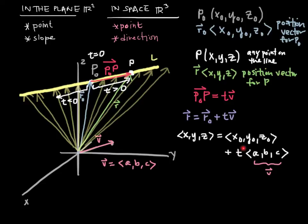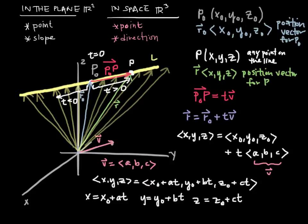t, the scalar here, is called the parameter, and each value of t gives the position vector of a different point on the line. It can also be rewritten like this in one single vector, and sometimes you'll see each individual equality between the components here and the components here written out as three separate equations, and those are called scalar parametric equations. They look like this. These are the two major ways to write the equation of a line in three-dimensional space.